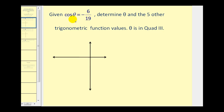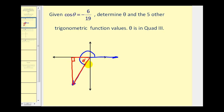If we were to sketch angle theta in standard position, the terminal side would be in the third quadrant, so it might look something like this. From here we can construct the reference triangle and the reference angle. Since cosine theta is equal to negative six-nineteenths, we can label the adjacent side to this reference angle negative six, and we can label the hypotenuse 19.